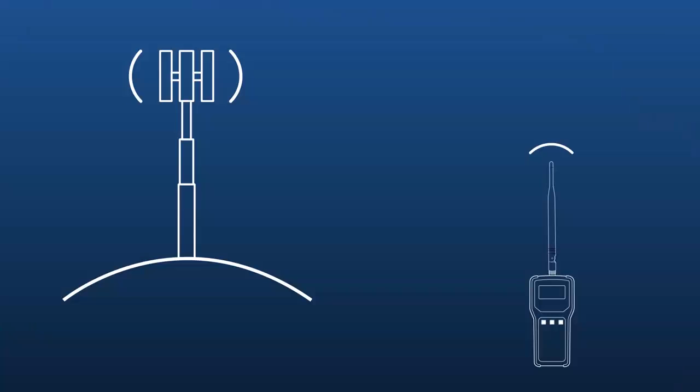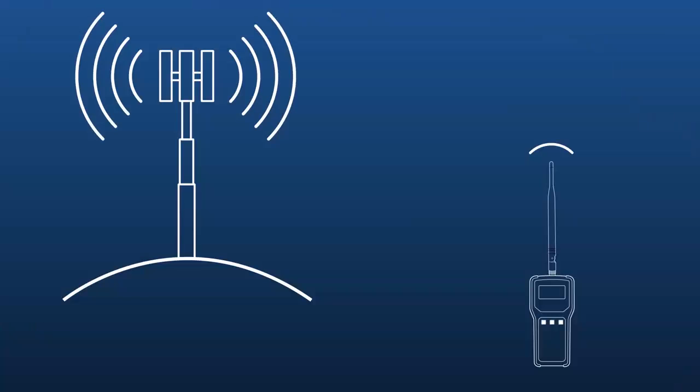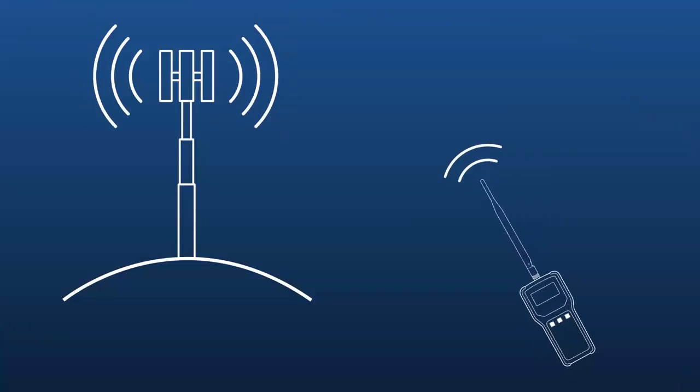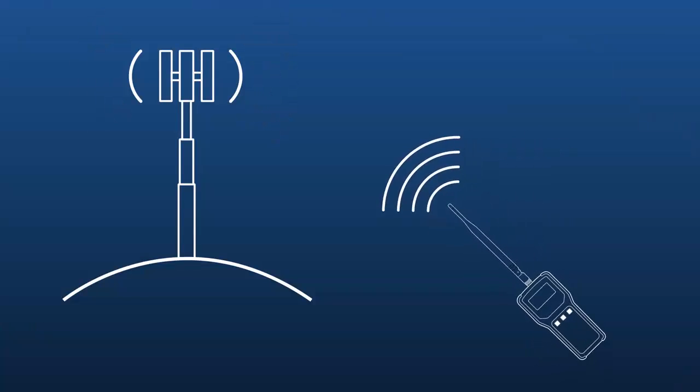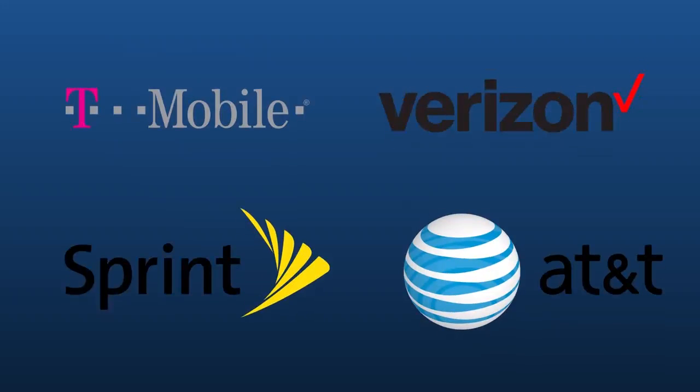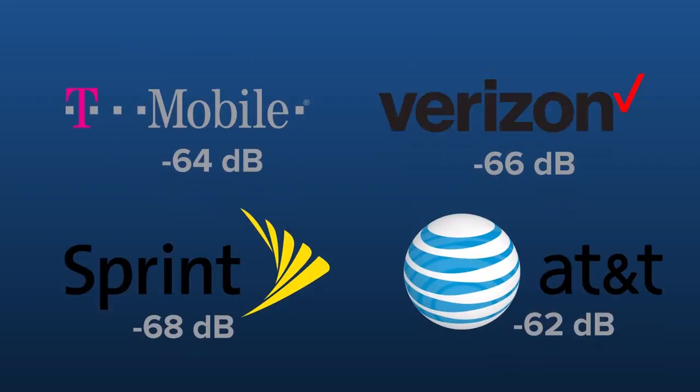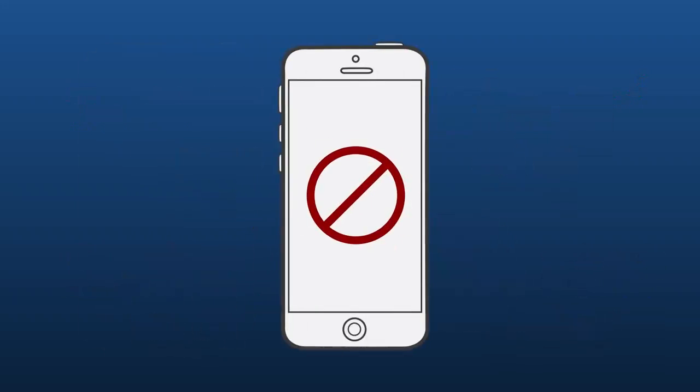Today I'll show you how to use a signal meter. A signal meter is an essential tool when setting up a cell phone amplifier. It can help you identify the direction for the source of the cell signal and get the signal strengths for all carriers on voice and data, neither of which are possible using a cell phone.